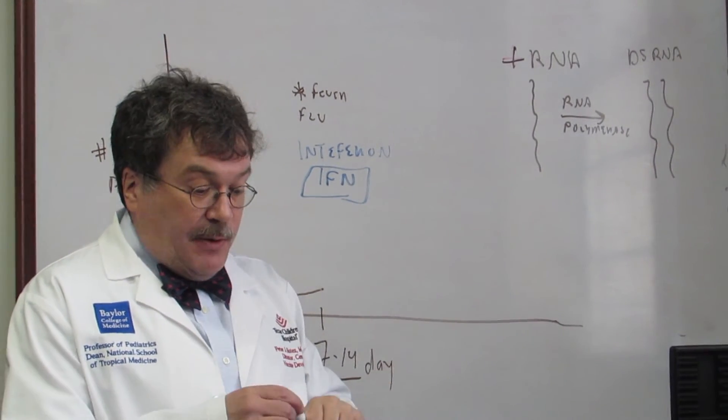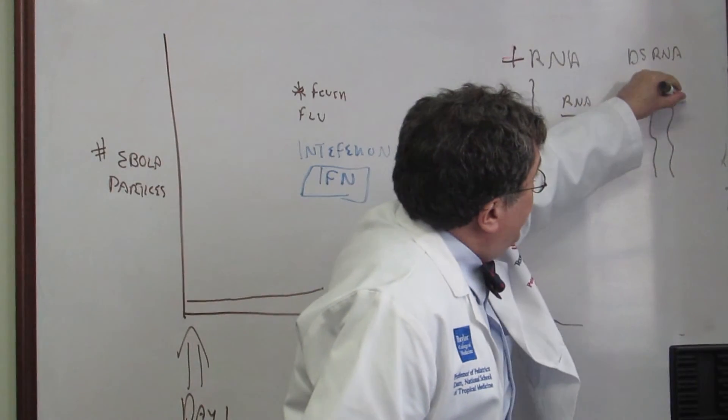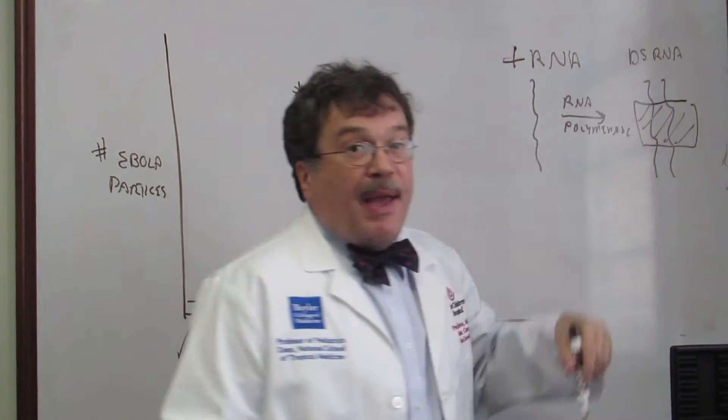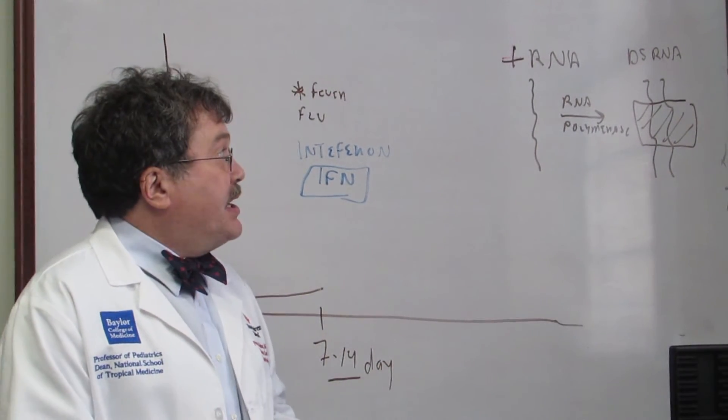What the Ebola virus does, however, is it produces a protein that binds up double-stranded RNA and basically masks it from the host, meaning us, ever recognizing it.